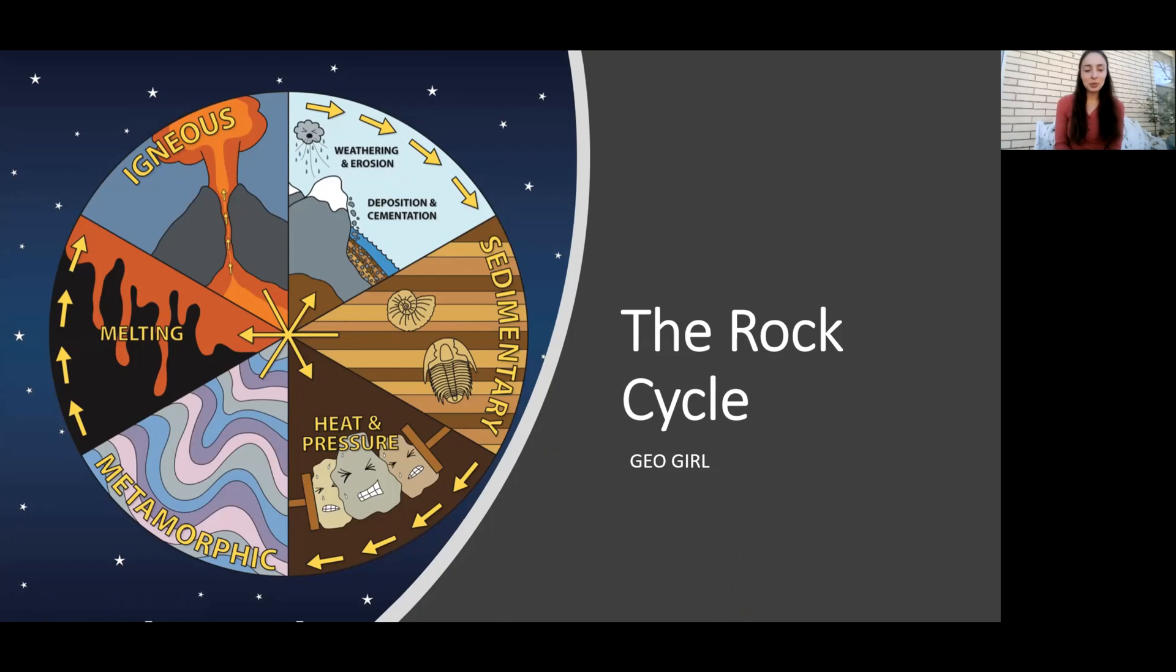The rock cycle. This title page includes an animation showing that this is a cycle. You can see the arrows around the outside going in a circle, but there are also arrows in the middle. That shows that whichever type of rock you land on, which we'll talk about in a second, it can go to whatever next part of the cycle it wants to. It doesn't have to go in an order, so that's a big thing about the rock cycle.